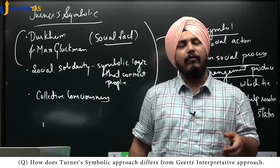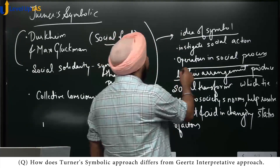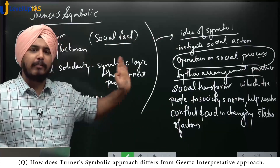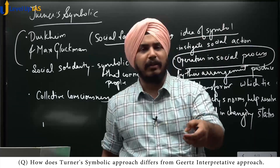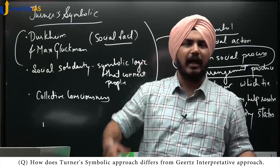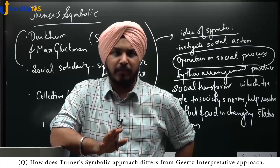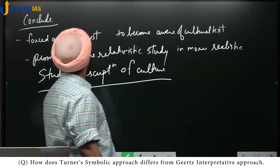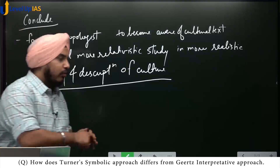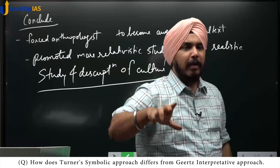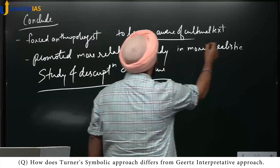This is how the idea of symbols given by Turner and Geertz was different. Turner explained how symbols help in resolution of conflict and changing the status of people. If this question is worth 20 marks, you can talk about the cockfight or the journey of a funeral. Now comes the conclusion — you can conclude by saying that although their understanding of symbols was different, the overall approach of symbolic anthropology forced anthropologists to become aware of the cultural text.